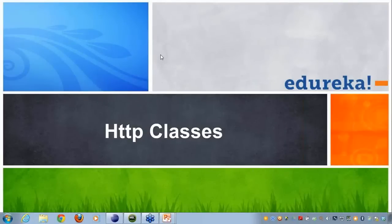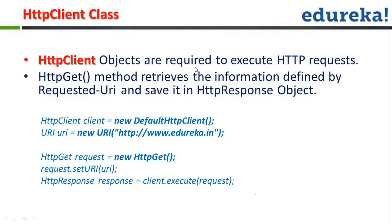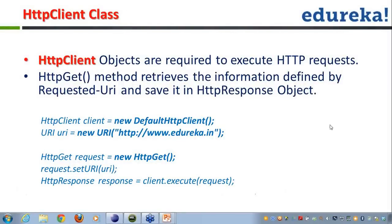Let's talk about the HTTP classes. Whenever we'll be doing some web interaction, we'll have a client device and a server. What we do is create an HTTP client object and use it to execute HTTP requests — specifically the HTTP GET method, which retrieves information defined by the requested URI (Uniform Resource Identifier). The response is then saved in an HTTP response object.